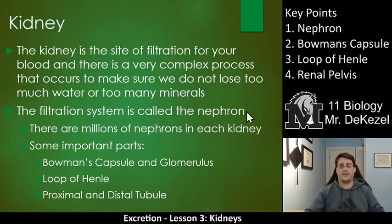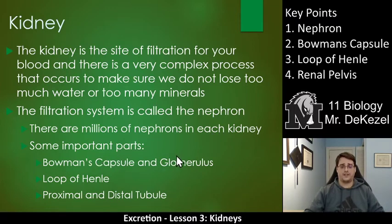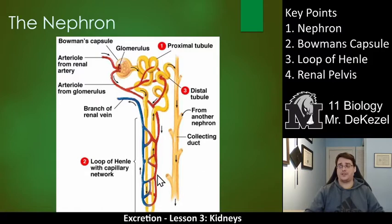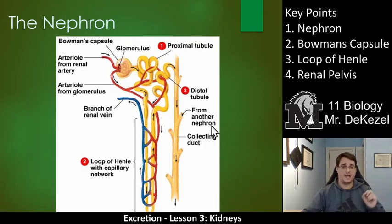The filtration system is called the nephron — that is key point one. There are millions of nephrons in each kidney, very tiny. Some important parts: Bowman's capsule and the glomerulus — key point two. The loop of Henle — key point three. And the proximal and distal tubules as well as the renal pelvis — key point four. The nephron is a unit of filtration. You can imagine millions of these stacked up so that you can filter a huge amount of blood, each one filtering a tiny amount.